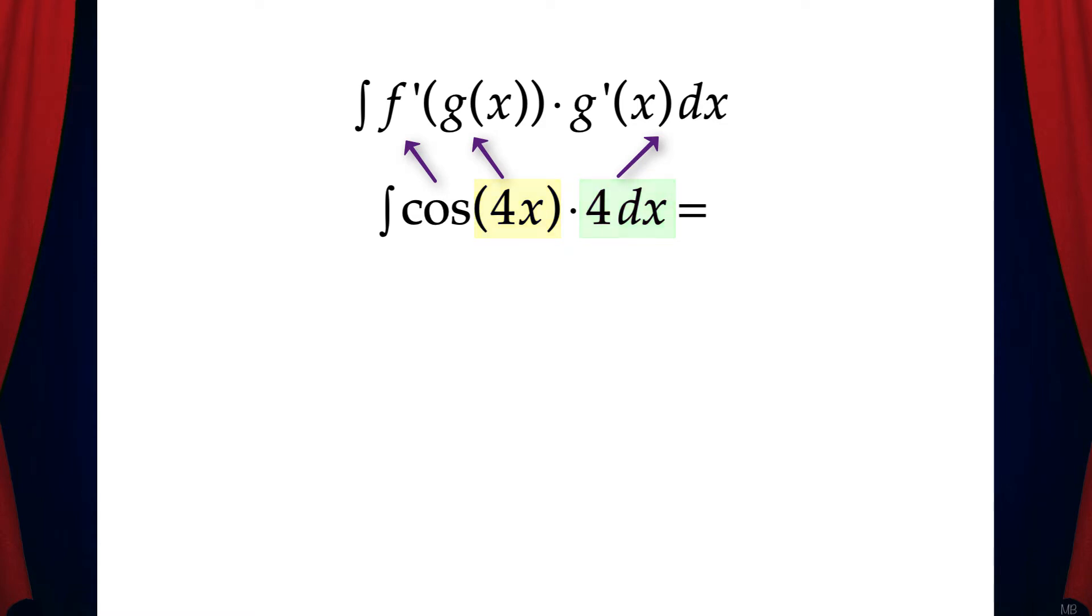So what we're going to do is we're going to let u equal 4x and du equal g prime of x dx, which is 4dx. And so now we have the integral of cosine u du. If we integrate this and find the antiderivative, we'll get sine u plus c.